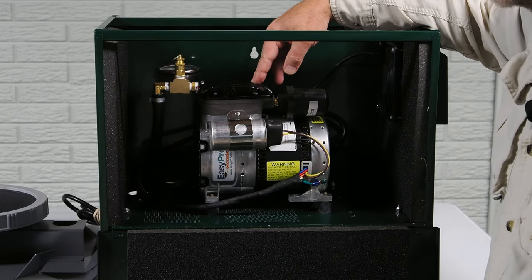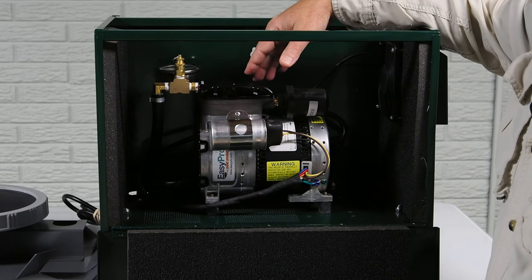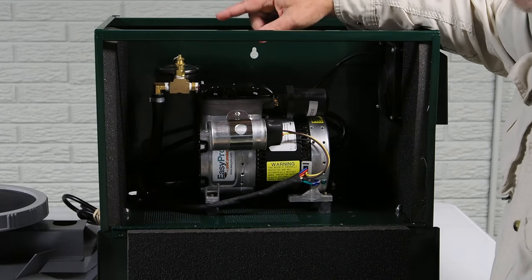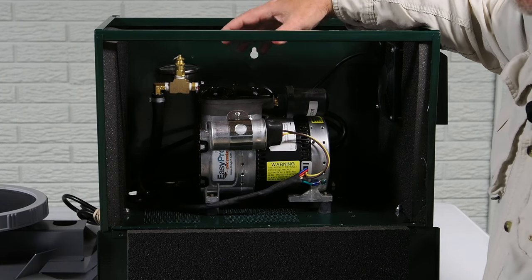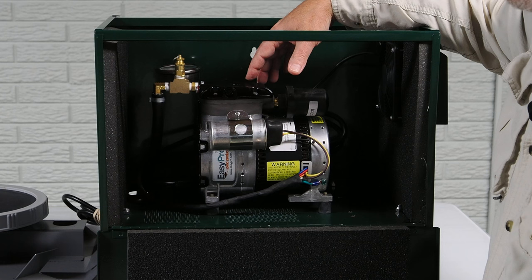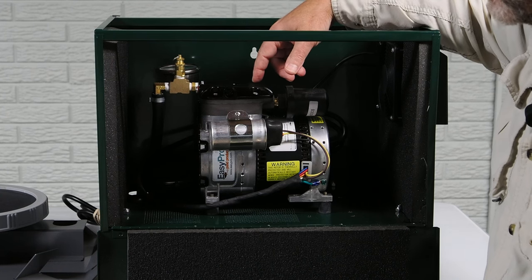As you lose depth, you lose coverage. But from anything from about a quarter acre on up to around an acre or so in size, this system, as you see it, is very well suited to provide ample aeration while running very economically. And so it's a great package.